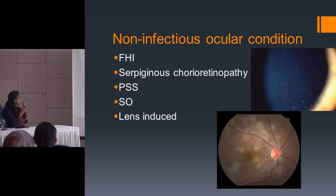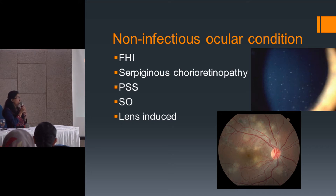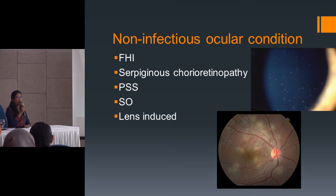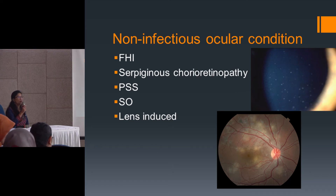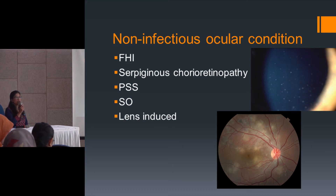Another condition is Posner-Schlossman syndrome, where intraocular pressure goes acutely high with a minimally inflamed eye. Sympathetic ophthalmia, occurring after penetrating trauma or intraocular surgery, is also present. Lens-induced uveitis — where a hypermature cataract leads to uveitis if not treated on time — is still present in Nepal. Although we have been fighting cataract blindness with much success, a small percentage of patients still don't get treatment on time due to lack of healthcare facilities and develop uveitis from hypermature cataracts.